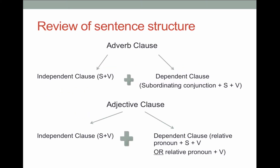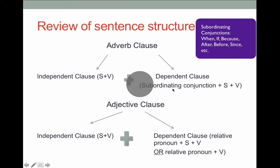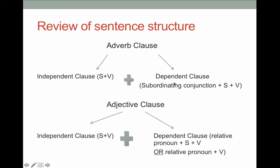The first thing I want to do is review sentence structure. We learned that with an adverb clause, we have an independent clause that has a subject, a verb, and sometimes an object. We add to it a dependent clause with a subordinating conjunction, like when, before, because, if — plus a subject and a verb. Remember, dependent clauses cannot stand on their own; they have to have an independent clause to create meaning.